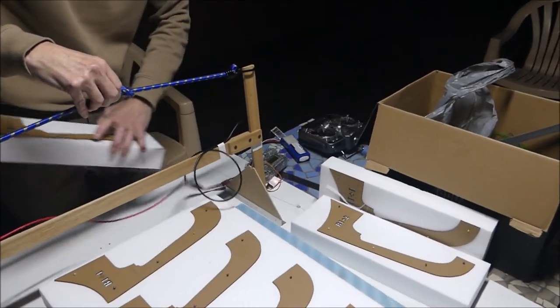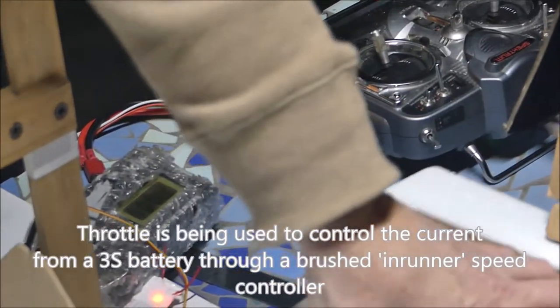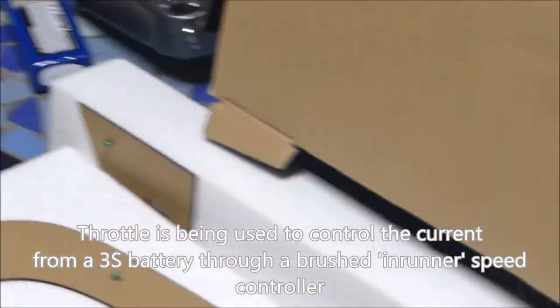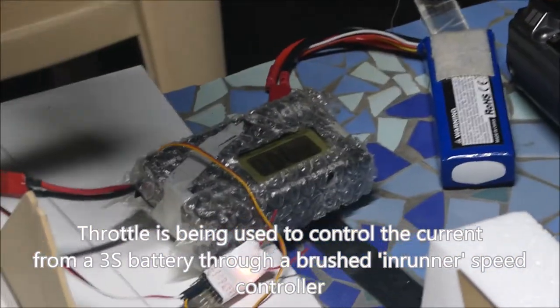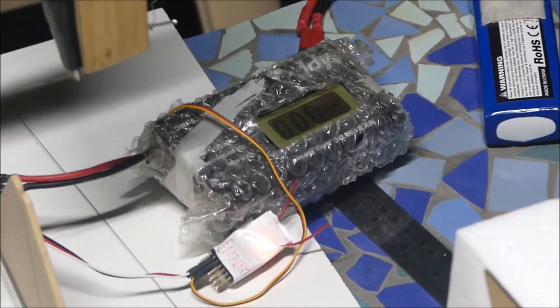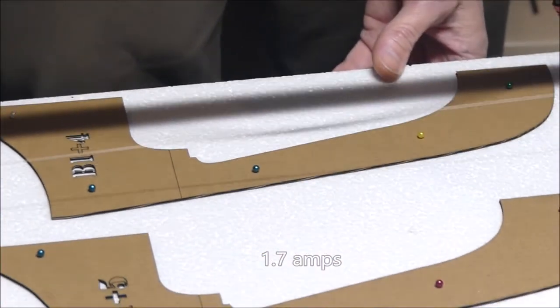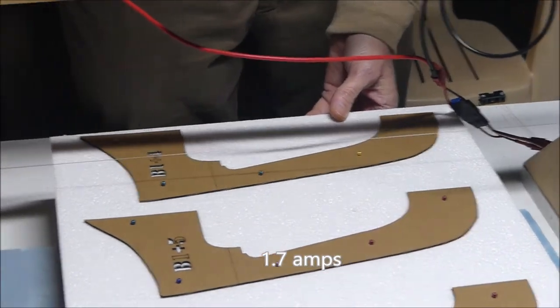He's controlling the current by his transmitter. He's got a receiver there and a meter to show how much current is going through it. It's a bit over an amp. 1.7 amps is doing the job nicely.